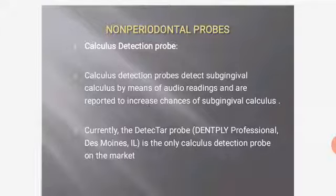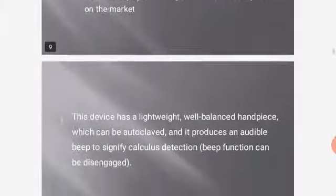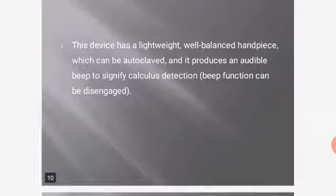Non-periodontal probes: Calculus detection probes detect sub-gingival calculus by means of audio readings and are reported to increase chances of sub-gingival calculus detection. Currently, the DetectR probe is the only calculus detection probe on the market. This device has a lightweight, well-balanced handpiece which can be autoclaved and produces an audible beep to signify calculus detection.